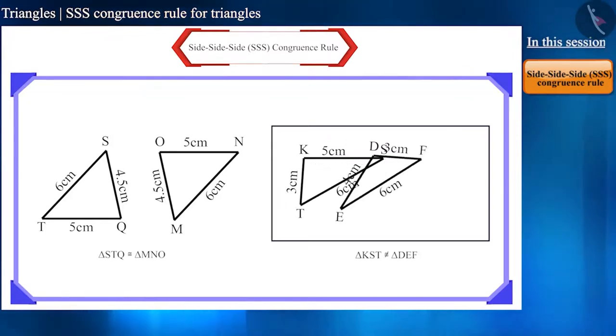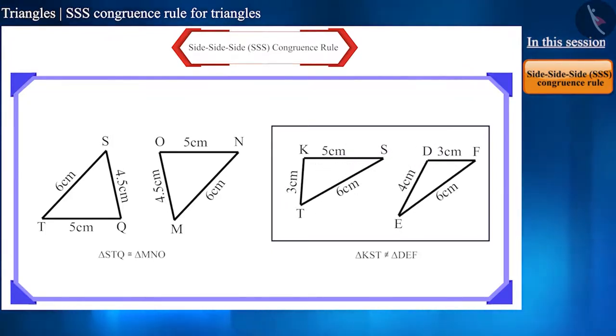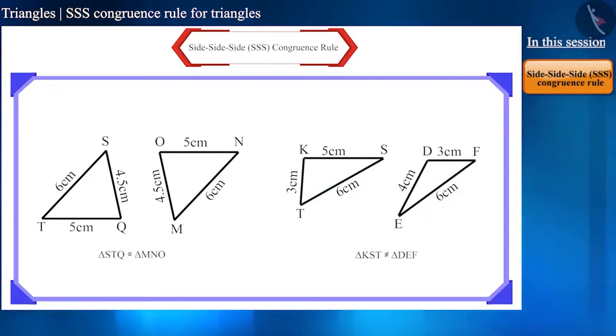So, we can say that for two triangles to be congruent, two sides being equal is not enough. Here, for triangles to be congruent, all three sides should be equal.